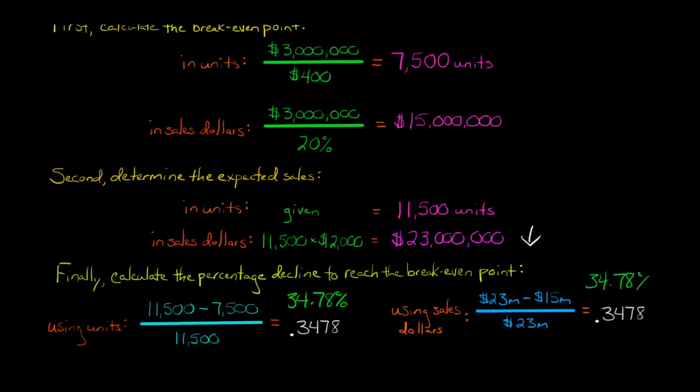And that means that, so we're expecting our sales revenue. The CEO thinks it's going to be $23 million of sales revenue. But that sales revenue, if we're wrong, and we overestimated this, and it's not $23 million, the sales revenue could decline by as much as 34.78% before we would start losing money. So if sales revenue were to decline by 35%, because that's higher than 34.78%, that would mean we would be losing money at that point.